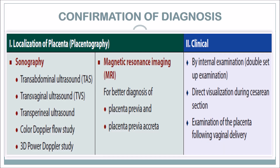Confirmation of diagnosis includes localization of the placenta by sonography: transabdominal ultrasound, transvaginal ultrasound, transperineal ultrasound, color Doppler flow study, and 3D power Doppler study. MRI may be used for better diagnosis of placenta previa and placenta previa accreta. Clinical confirmation is by internal examination (double setup examination), direct visualization during caesarean section, and examination of the placenta following vaginal delivery.